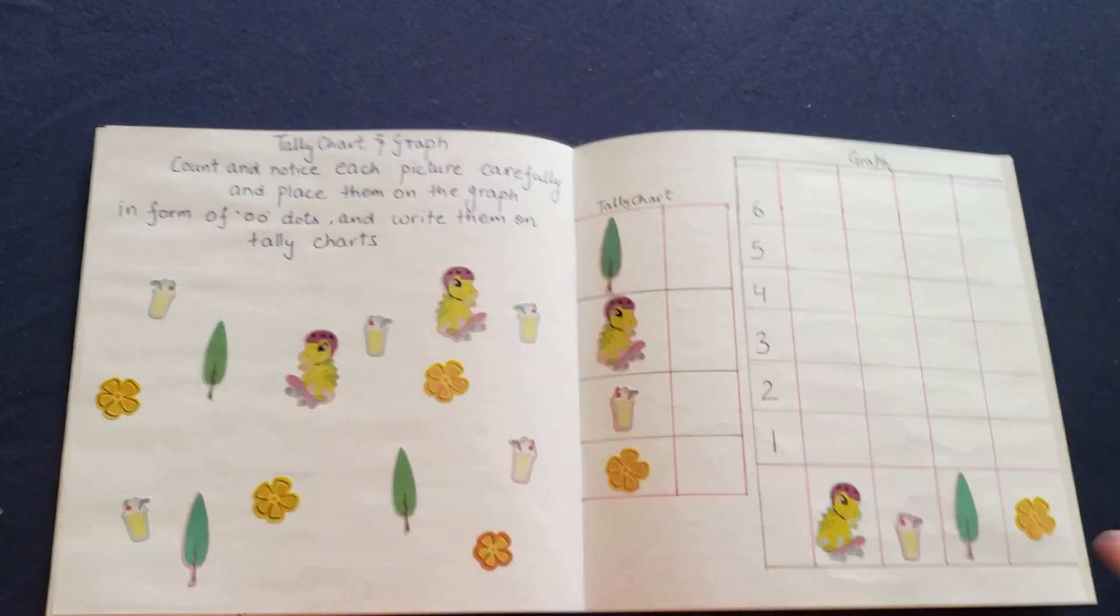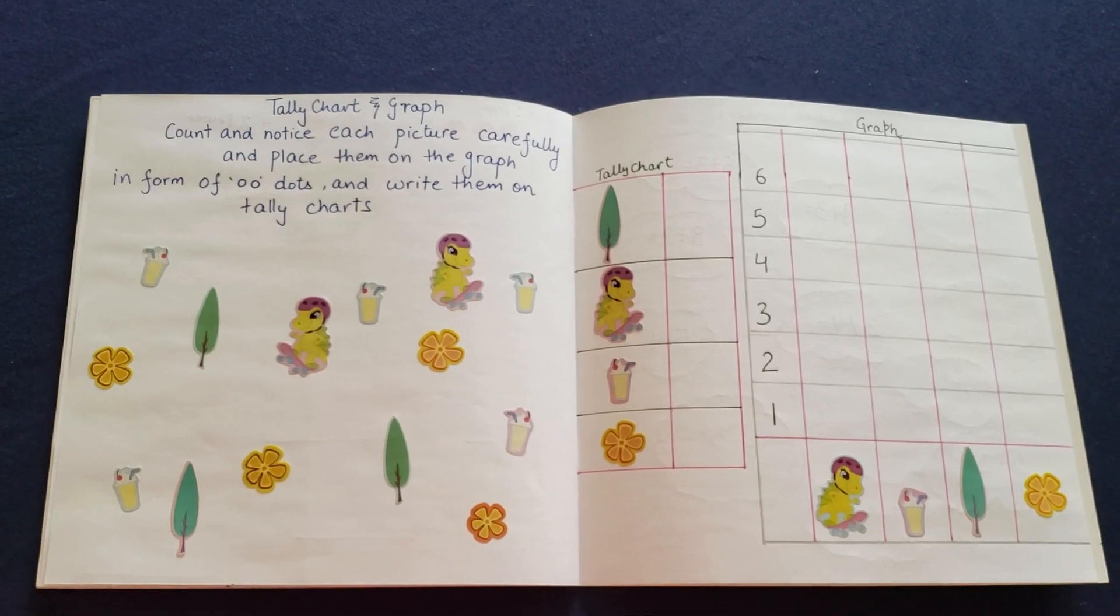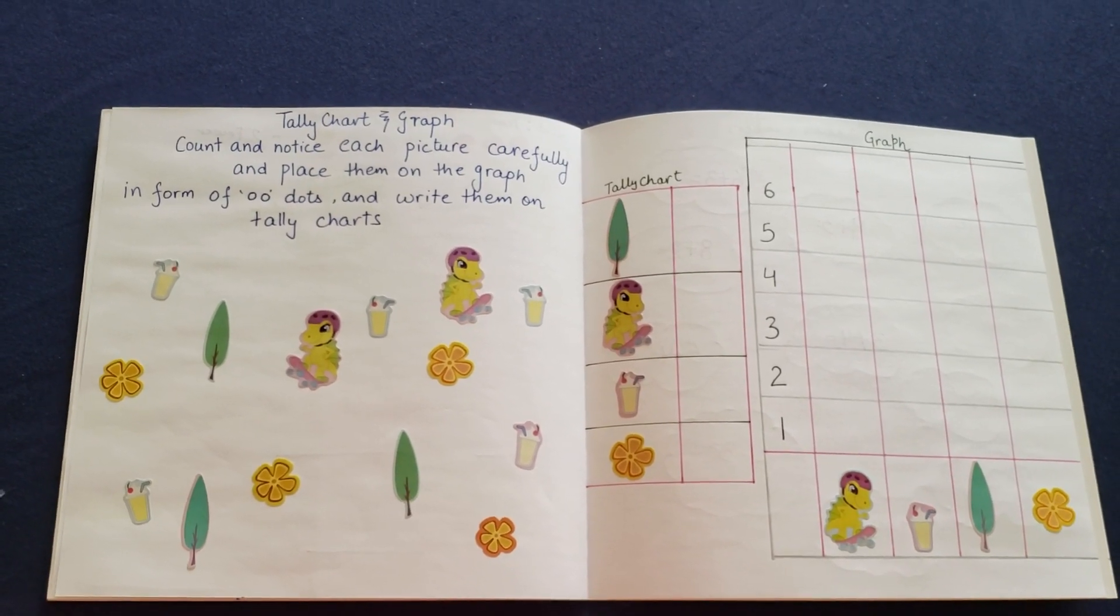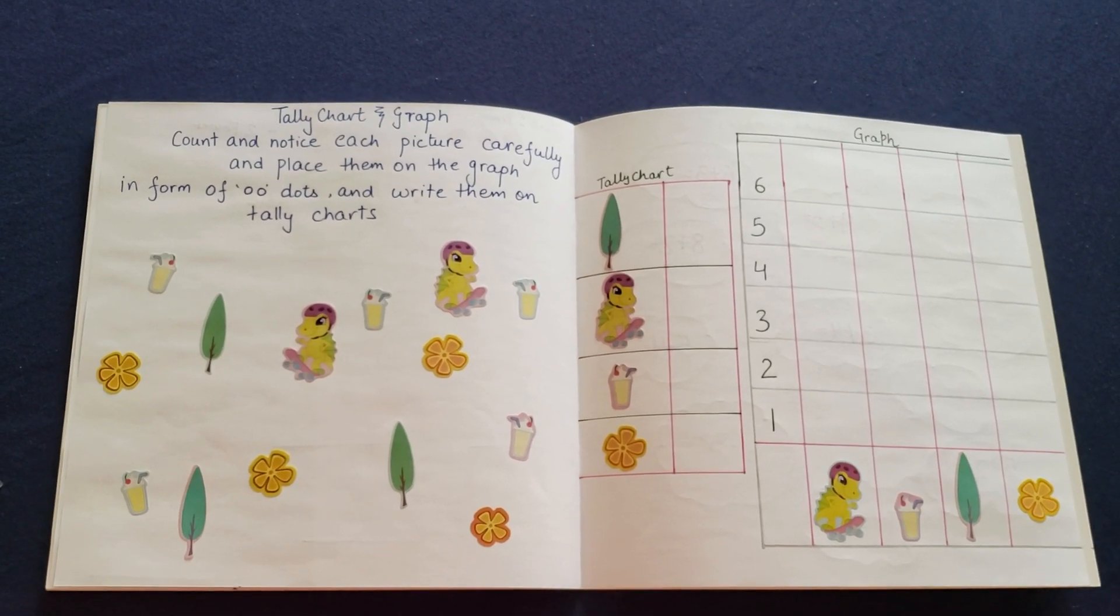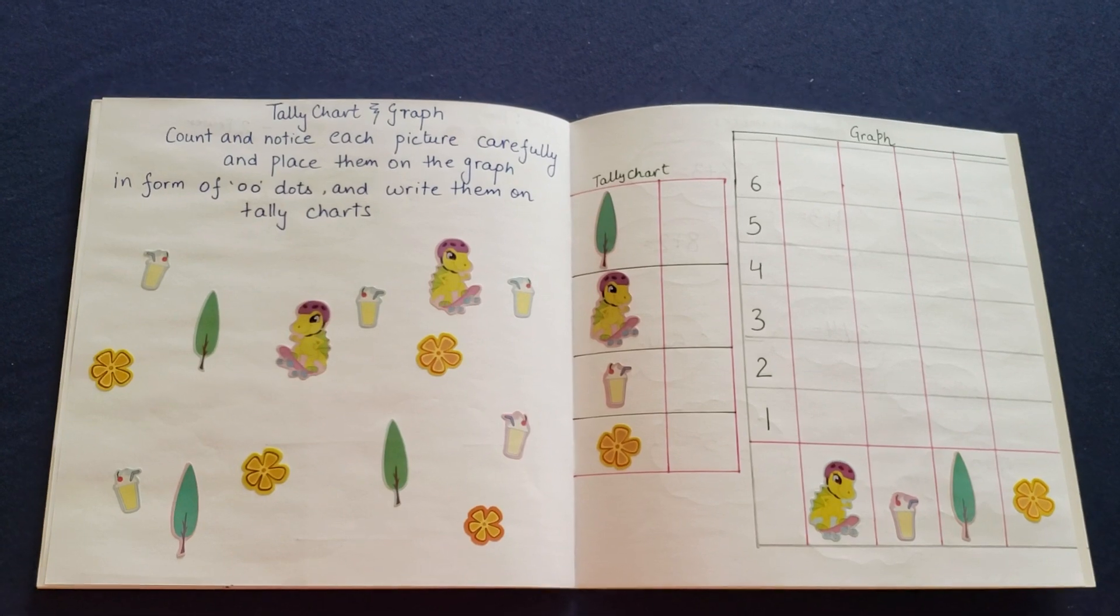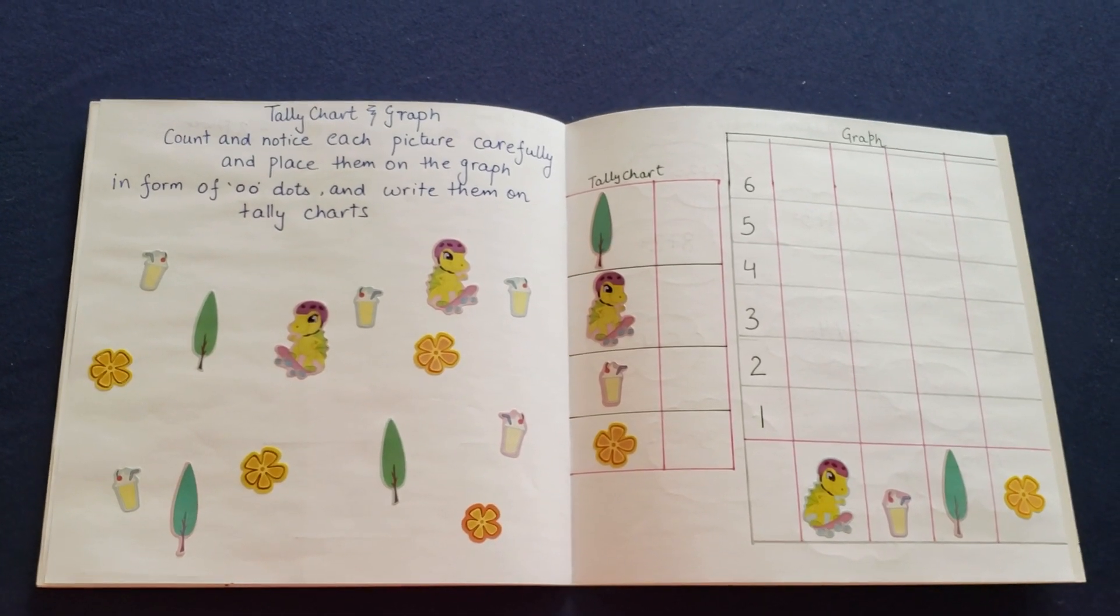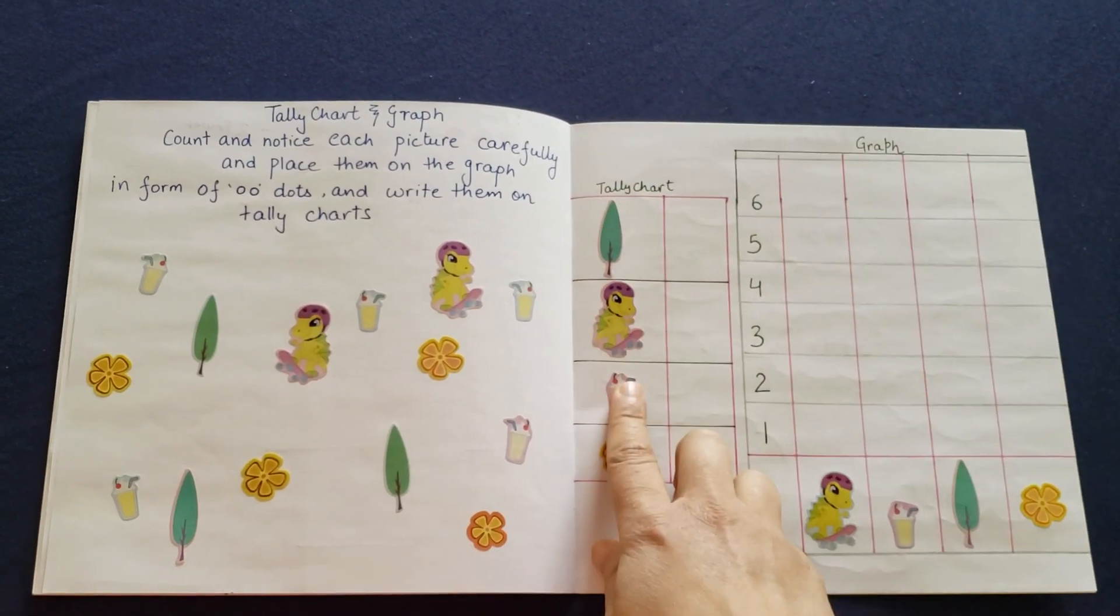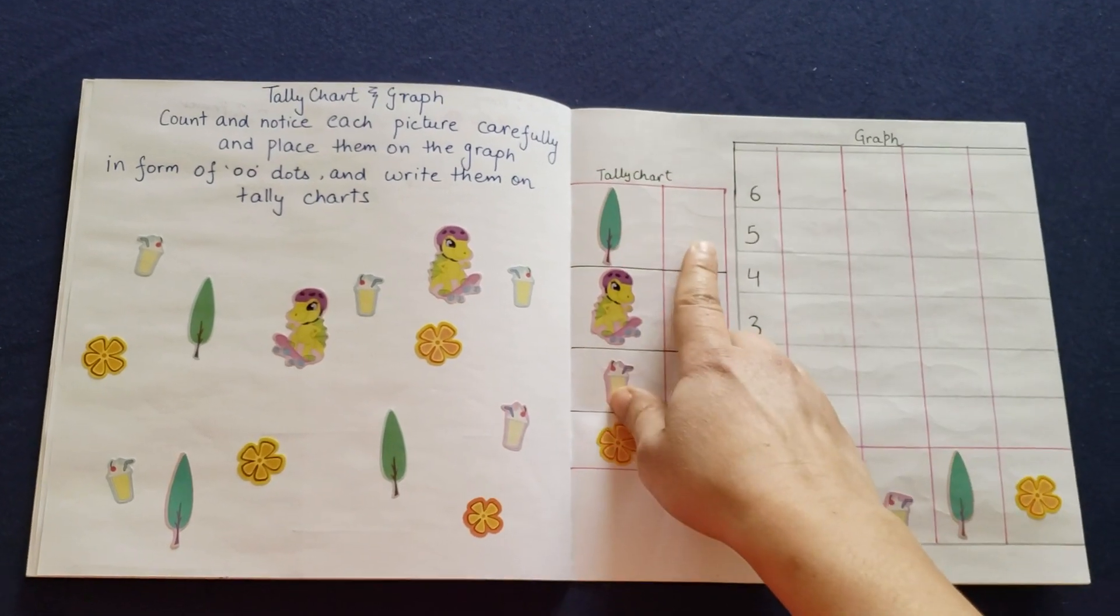Okay, then there's a tally chart and graph. I made a very simple one, not going overboard. Just wanted to check if she likes something like this so that I can continue for her next book activities. Count and notice each picture carefully and place them on the graph in form of dots and write them on tally charts. So what she has to do in tally charts, she needs to count and write the total number.